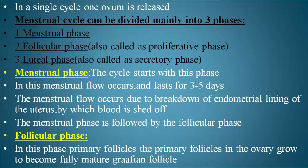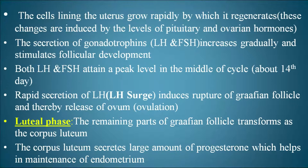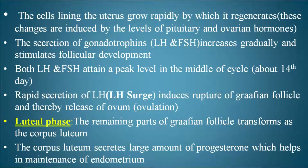The menstrual phase is followed by the follicular phase. In the follicular phase, primary follicles in the ovary grow to become a fully mature Graafian follicle. The cells lining the uterus grow rapidly, regenerating the endometrium. These changes are induced by the levels of pituitary and ovarian hormones. The secretion of gonadotropins like LH and FSH increases gradually and stimulates follicular development.